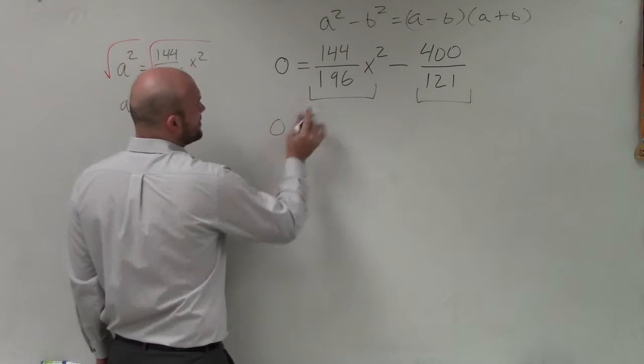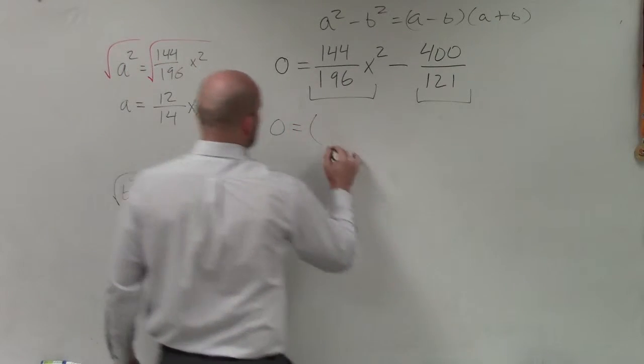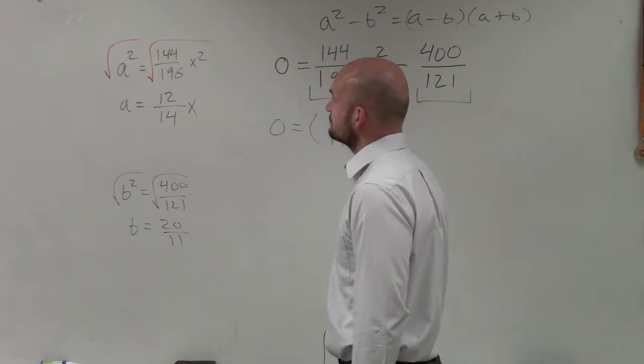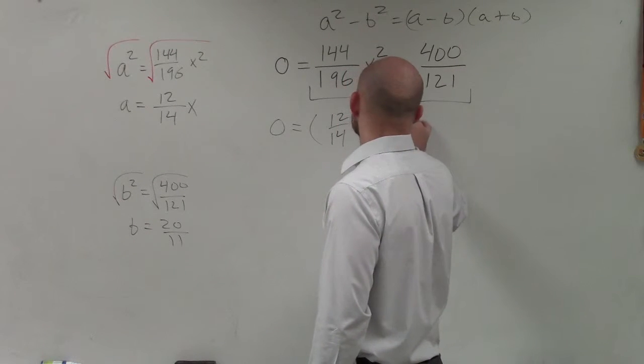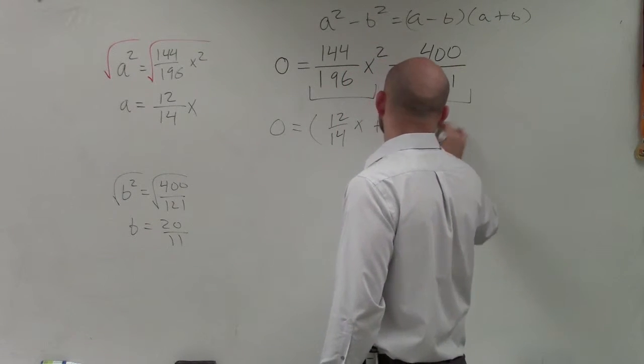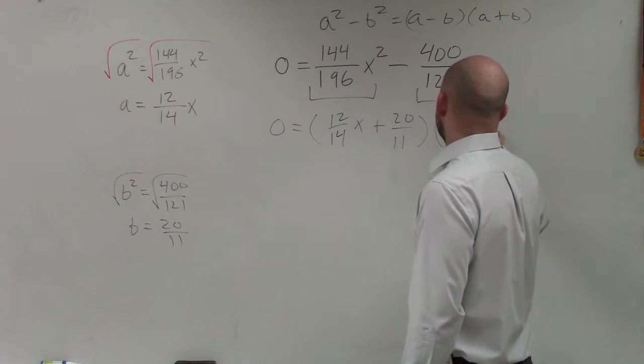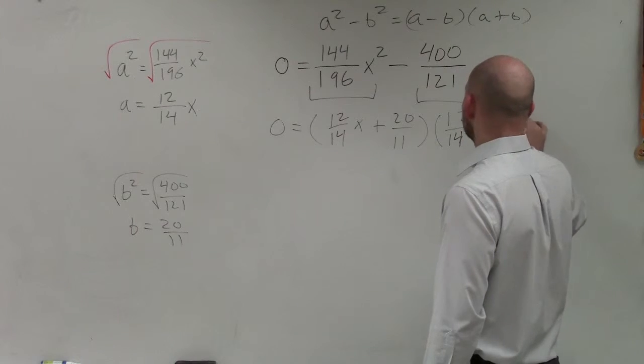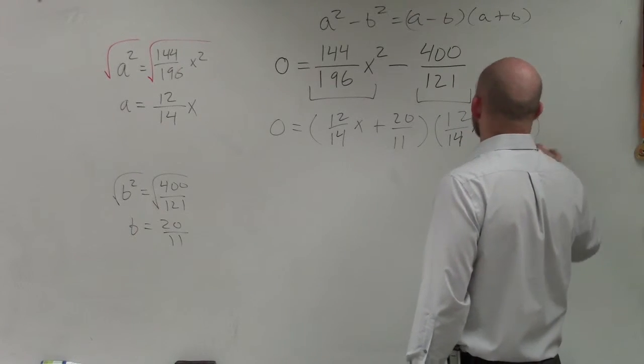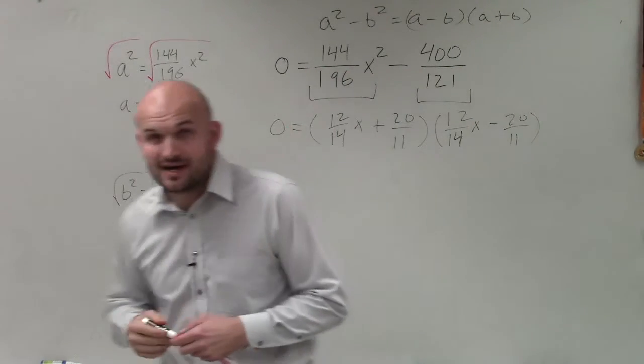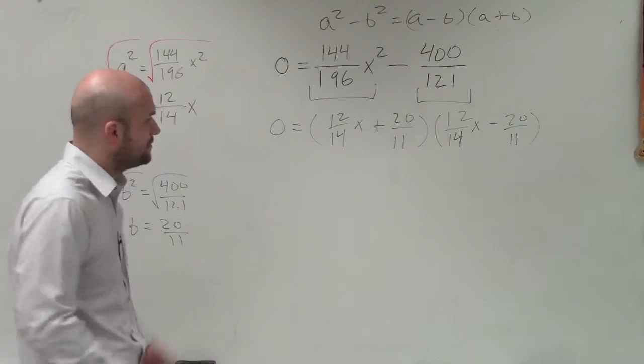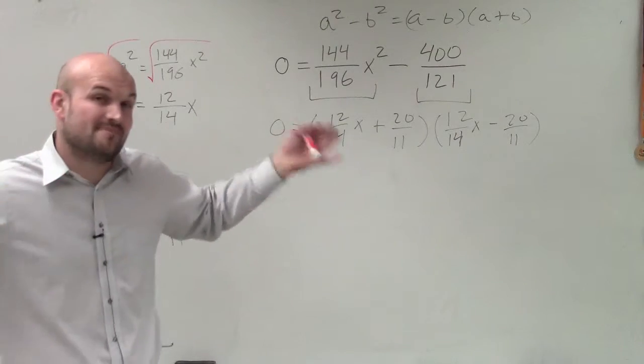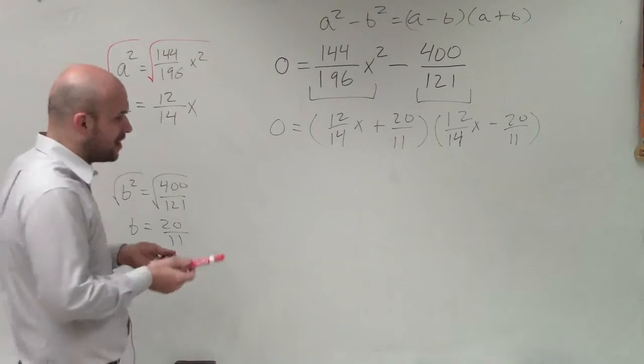So now, I can rewrite this in its factored form, set equal to 0 as 12 over 14x plus 20 over 11 times 12 over 14x minus 20 over 11. Now, you can obviously go ahead and simplify this example. You see that we have 12 over 14. But I'm not going to get nitpicky right now. Once I get to solving, I actually have to do some math. Then I'll definitely work on to solving it.